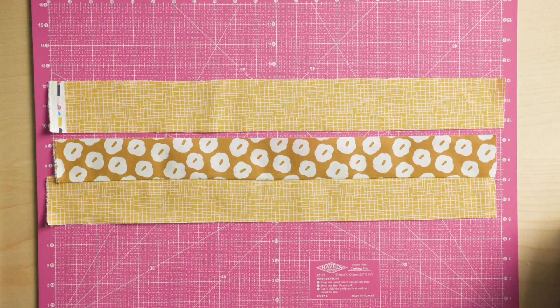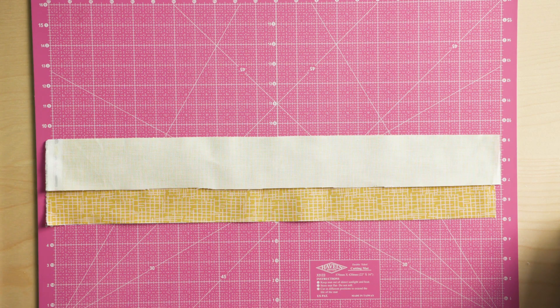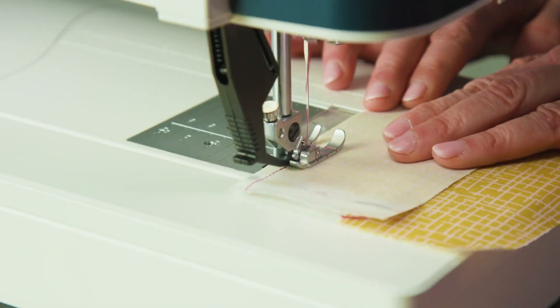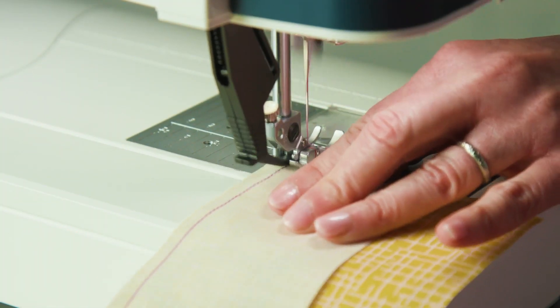Here we've sewn two strips together. Before sewing, align the raw edges. Stitch with a quarter-inch seam, adjusting raw edges as needed.